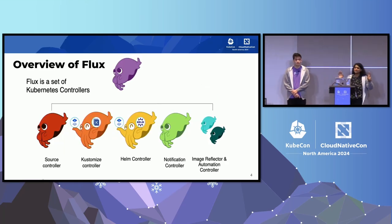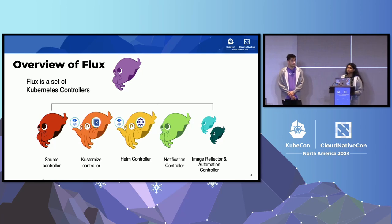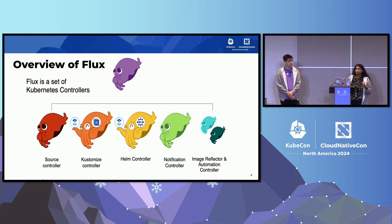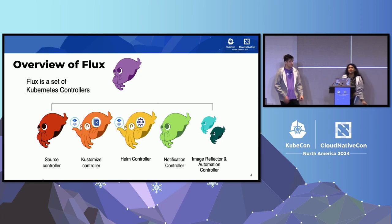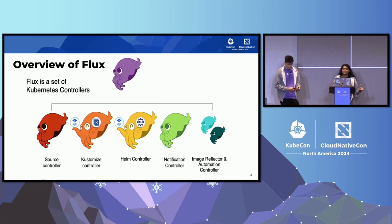I'm going to talk about the architecture overview. It's really important to show how slim this project is. Flux is made up of a set of Kubernetes controllers and has 13 CRDs. The source controller continuously pulls your source — which could be a Git repo, an S3 bucket, OCI, or most things — and pulls the artifacts it finds there. Then the Kustomize controller or the Helm controller come in and apply them.